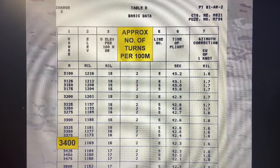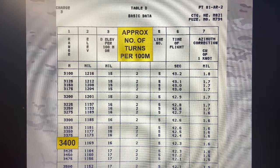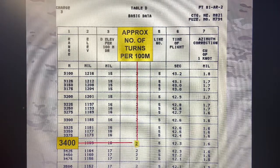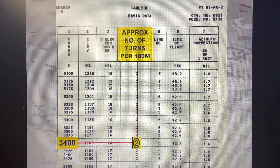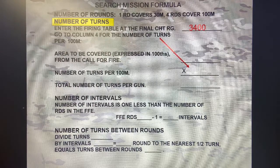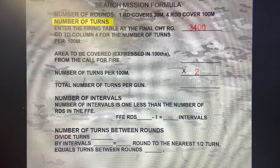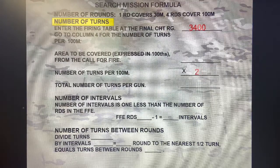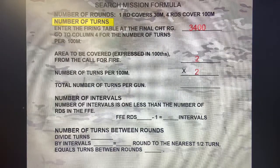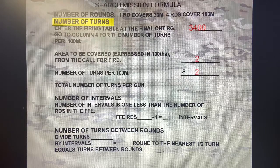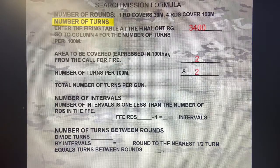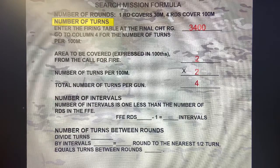So I know I'm entering at my final chart range of 3400, in table D at charge 3. I go to column 4 — approximate number of turns per 100 meters — and those two intersect to give me 2 turns per 100 meters. I need to go back to my formula: I take the area to be covered, which is 200 meters, express that in hundredths — which gives me 2 — multiply those two together, and that gives me the total number of turns per gun. So each gun will be turning a total of 4 turns.